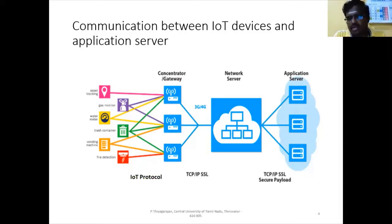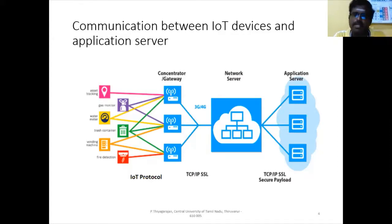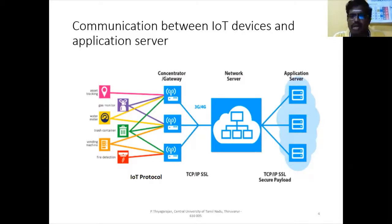From the gateway to the network server, we need a protocol to transfer the data — for this we use the standard TCP/IP protocol. Again, from the network server to the application server, which is nothing but the cloud server, the transfer is also done by TCP/IP. We will discuss how TCP/IP is tuned to work in the IoT protocol, and we will have an elaborate discussion on the IoT protocols currently available.